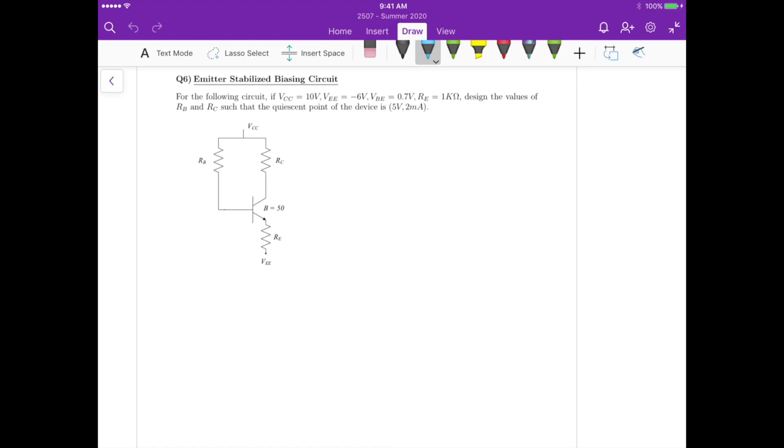For question six, we have an emitter stabilized biasing circuit, and we know that VCC equals 10 volts, VEE is minus 6 volts, and the base emitter voltage is 0.7, the emitter resistance is 1k, and we need to design the values of RB and RC such that the quiescent point of the device is 5 volts and 2 milliampere.